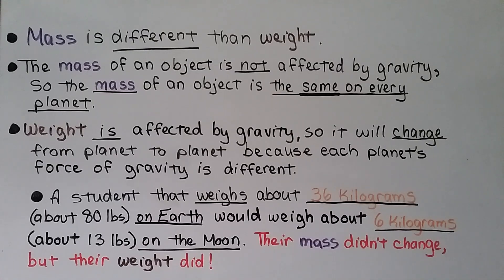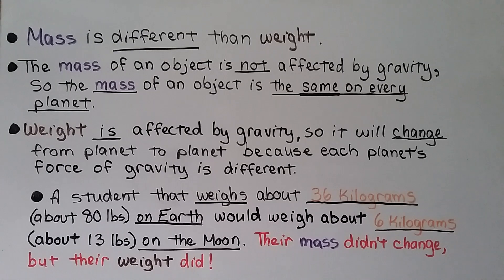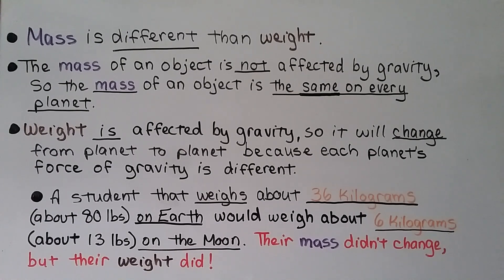Mass is different than weight. The mass of an object is not affected by gravity, so the mass of an object is the same on every planet. Weight is affected by gravity, so it will change from planet to planet. A student that weighs about 36 kilograms — about 80 pounds on Earth — would weigh about 6 kilograms, which is about 13 pounds, on the moon. Their mass didn't change, but their weight did because the gravity was different.